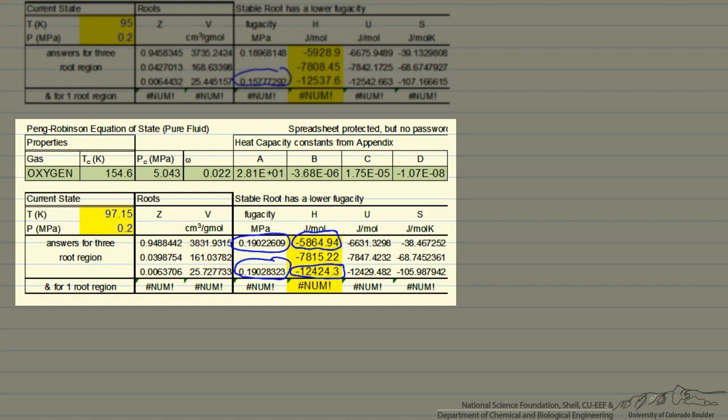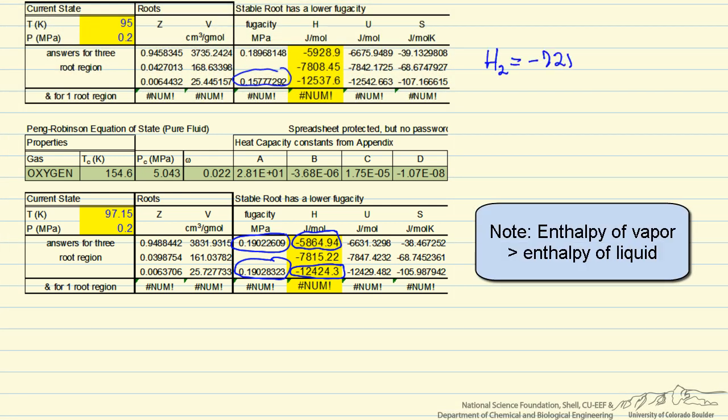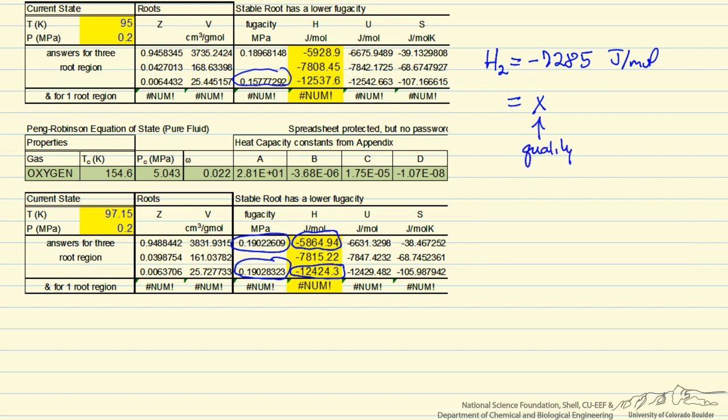So we can calculate the quality by saying H2, which is minus 7,285 joules per mole, is equal to some fraction that's vapor. So this is quality, the fraction that's vapor, times the enthalpy of the vapor phase, and then the fraction remaining is liquid times the enthalpy of the liquid phase. So we don't know x, but we can substitute in the values from the equation of state spreadsheet for the vapor and liquid phase enthalpy.